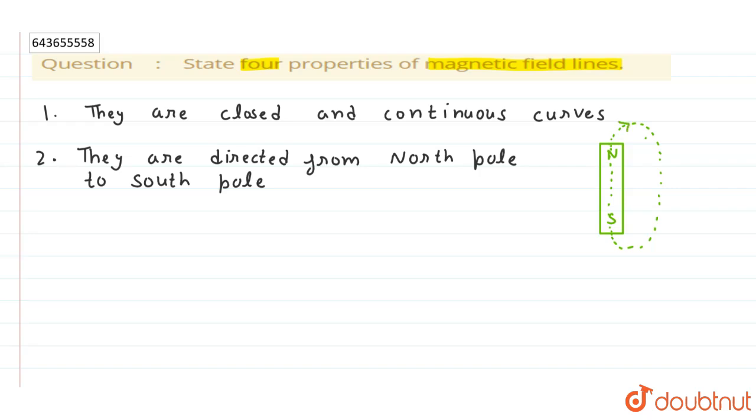will always start from north and go towards south pole. Now the third property is they never intersect each other. This means that you will never be able to see the magnetic field lines crossing each other, like one line going like this and crossing this line like this.